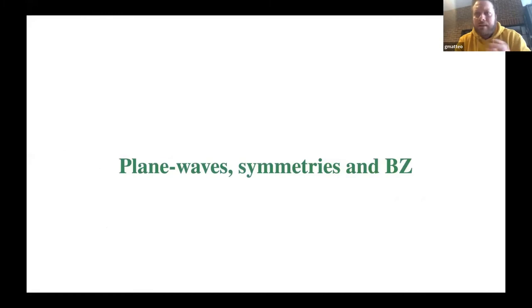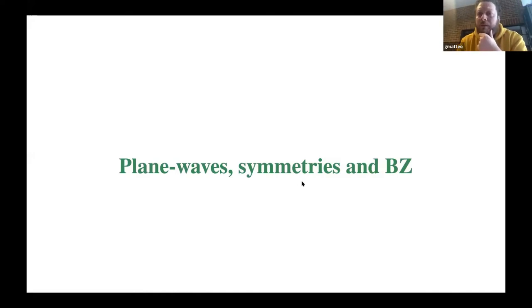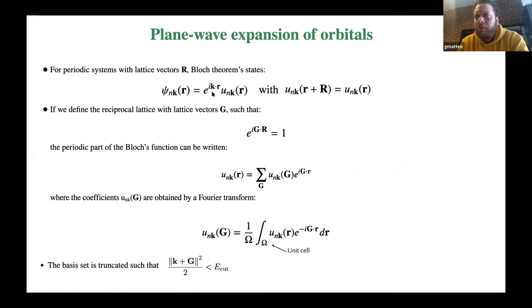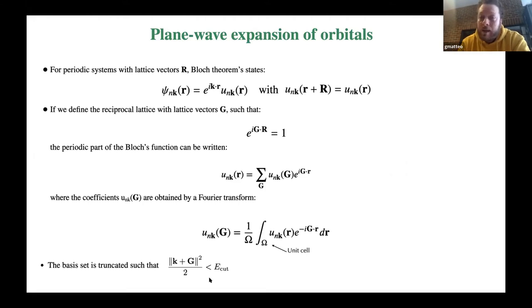Before discussing GW calculation in practice, I would like to remind you of some basic concepts related to plane waves, symmetries, and Brillouin zone sampling. This is the Bloch theorem, which tells us that in a crystalline system, the eigenvalues of a single-particle Hamiltonian are written as a phase factor depending on the wave vector times the periodic part. This is the function we expand in a plane wave basis set, truncating the expansion by introducing a cutoff energy E-cut.